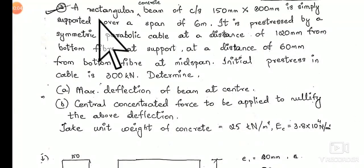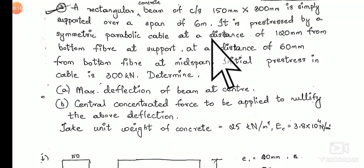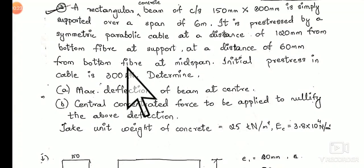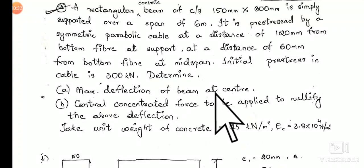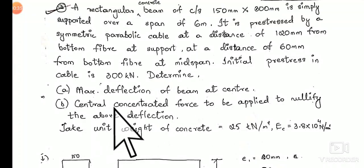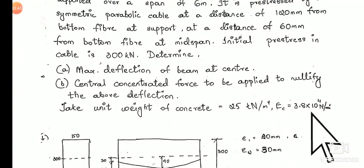Now we shall take up the third problem. A rectangular concrete beam of cross-section 150 by 300 mm is simply supported over a span of 6 meters. It is pre-stressed by a symmetric parabolic cable at a distance of 120 mm from the bottom fiber at the support and at a distance of 60 mm from the bottom fiber at mid-span. Initial pre-stress in the cable is 300 kilo Newton. Determine the maximum deflection of the beam at center, and the central concentrated force to be applied to nullify that deflection. Take unit weight of concrete as 25 kN/m³ and Young's modulus as 3.8 × 10⁴ N/mm².